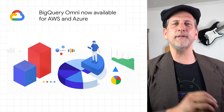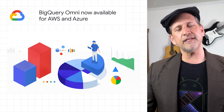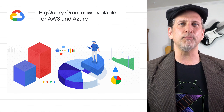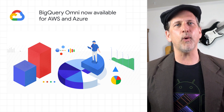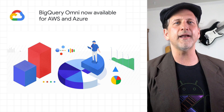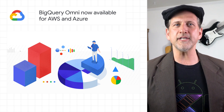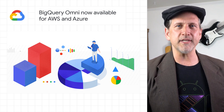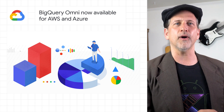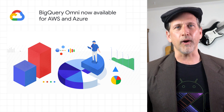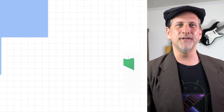We announced the availability of BigQuery Omni, a multi-cloud analytics service that lets data teams break down data silos by using BigQuery to securely analyze data across clouds. It will be available to all customers on AWS and for select customers on Microsoft Azure during Q4. Learn more, including how to get started with BigQuery Omni, on the post.